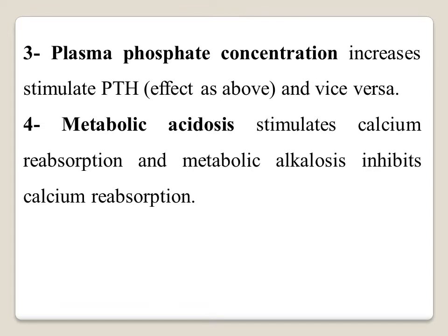Another factor: when there is an increase in plasma phosphate concentration, it stimulates secretion of parathyroid hormone, which in turn increases calcium reabsorption and decreases urinary calcium excretion, and vice versa. Additionally, metabolic acidosis increases calcium reabsorption, while metabolic alkalosis decreases or inhibits calcium reabsorption.